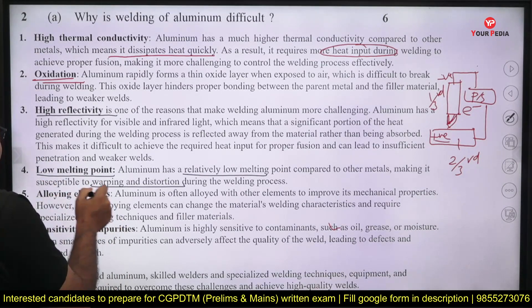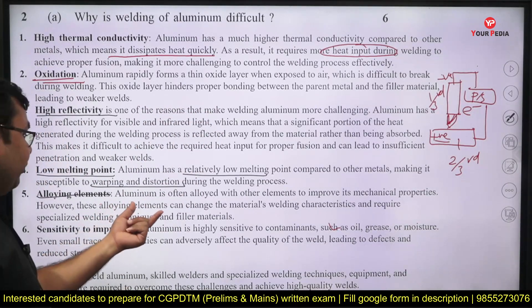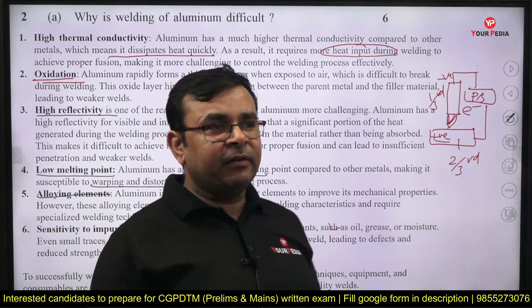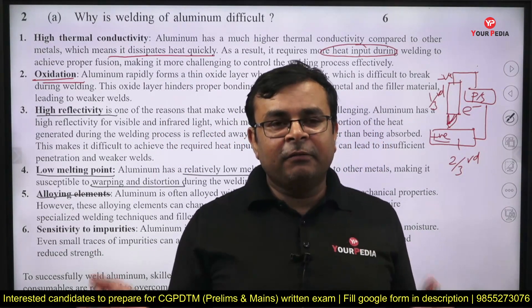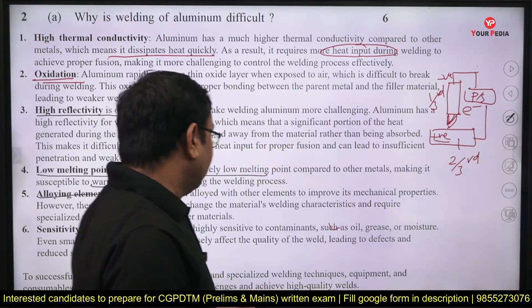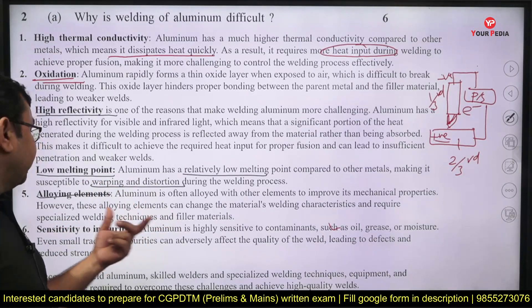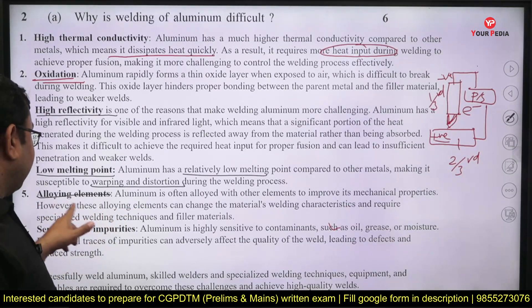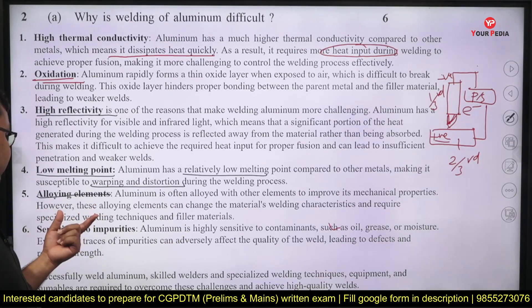Another challenge is alloying elements. Aluminum is often alloyed with other elements to improve its mechanical properties — we know that aluminum has very low strength, so to make it stronger and harder we need to add several alloying elements. When you add these alloying elements, they create an obstacle in the welding. These alloying elements can change the material's welding characteristics and require specialized welding techniques and filler materials.